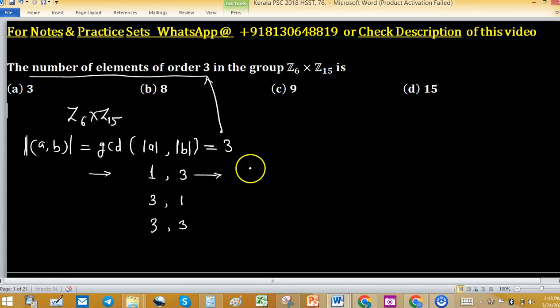In Z6 there is possibility of one order element and that one will be, order 1 equals 1. And order 3 in Z15, because 3 divides 15, that's why order 3 elements will exist in Z15. And value of number of elements of order 3 in Z15 are 2.